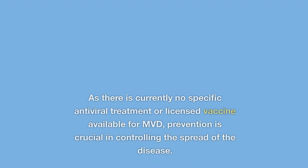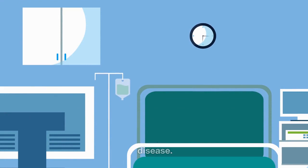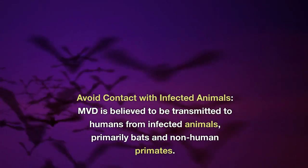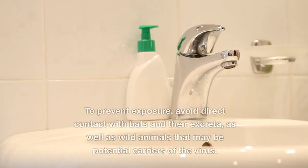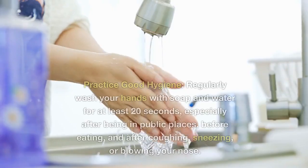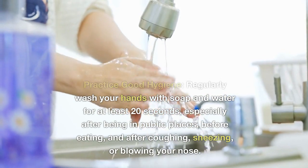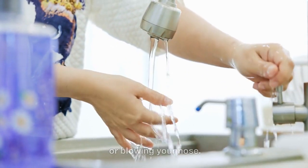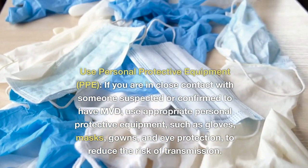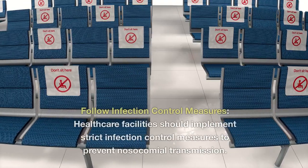How to prevent MVD: as there is currently no specific antiviral treatment or licensed vaccine available, prevention is crucial. Avoid direct contact with bats and their excreta, as well as wild animals that may be potential carriers of the virus. Regularly wash hands with soap and water for at least 20 seconds, especially after being in public places, before eating, and after coughing, sneezing, or blowing your nose. If in close contact with someone suspected or confirmed to have MVD, use appropriate personal protective equipment such as gloves, masks, gowns, and eye protection to reduce transmission risk.